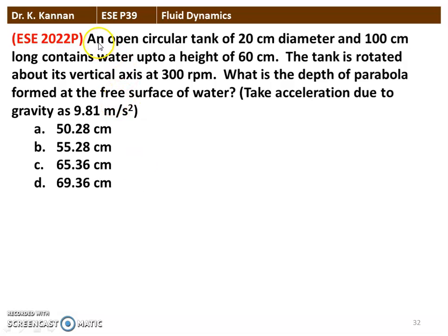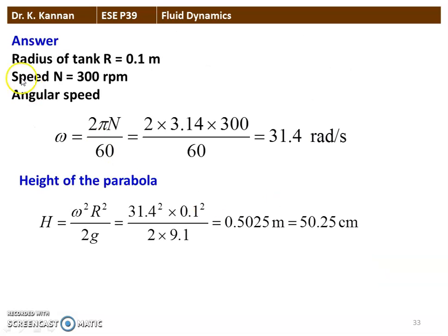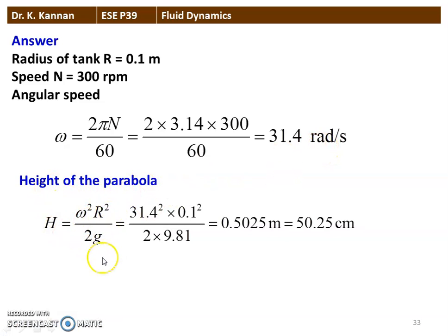The next question is from the 2022 question paper. An open circular tank of 20 centimeters diameter and 100 centimeters long contains water up to 60 centimeters. The tank is rotated about the vertical axis at 300 RPM. What is the depth of the parabola formed at the free surface? Radius = 0.1 m, omega = 2π×300/60 = 31.4 rad/s. Height of parabola H = ω²R²/2G = 31.4² × 0.1²/(2 × 9.81) = 0.5025 meters = 50.25 centimeters.